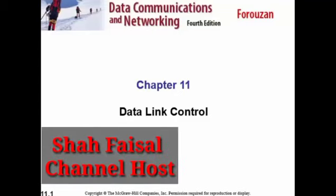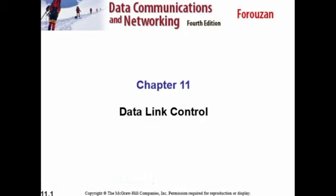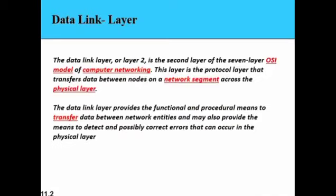The topic is the data link layer, which is the second layer of the network model. In this lecture we will discuss the data link layer in detail. The data link layer is the second layer of the seven-layer OSI model of computer networking. Its main functions are to detect errors and to be responsible for data flow control.